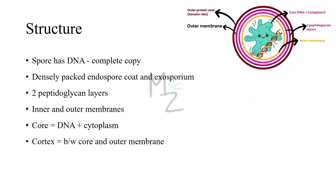Regarding structure, the endospore has its DNA — a complete copy — densely packed in a coat: an outer protein coat that is keratin-like. Some endospores have an exosporium on the outer layer. The endospore has two peptidoglycan layers, as well as inner and outer membranes. Its DNA and cytoplasm make up the core. The cortex is anything between the core and the outer membrane — so it includes the two peptidoglycan layers.